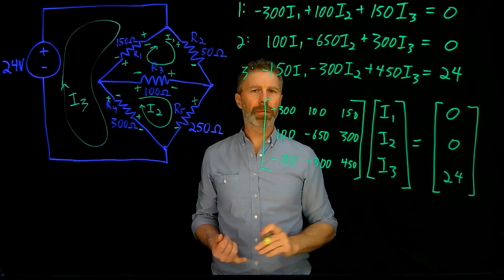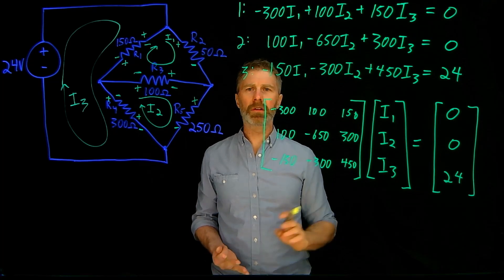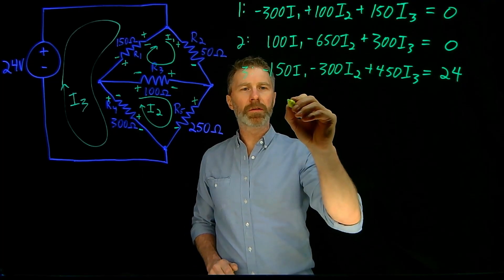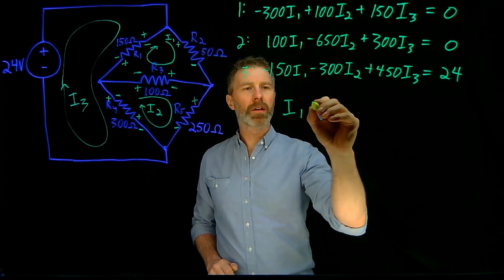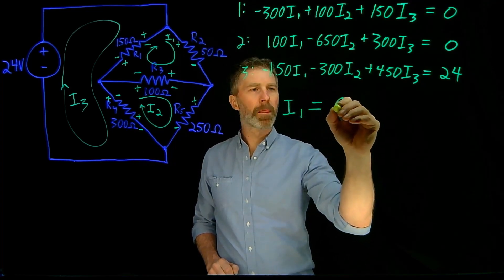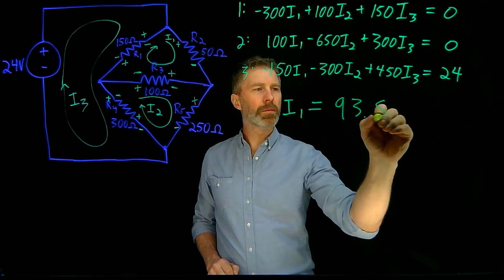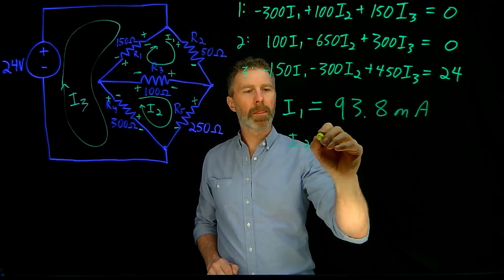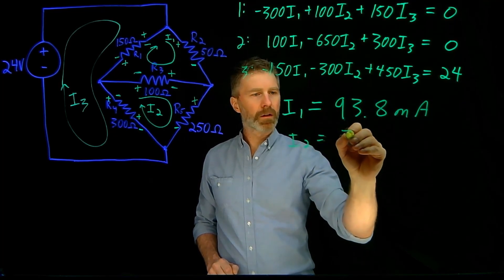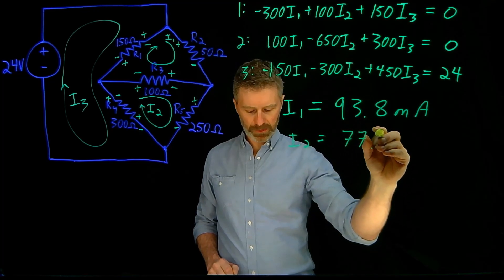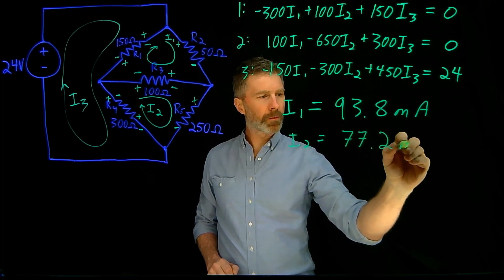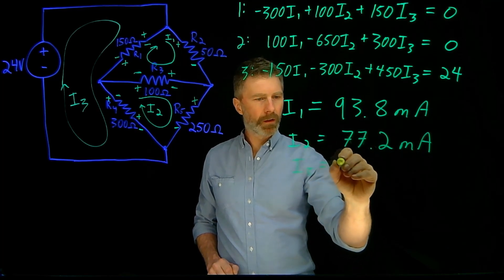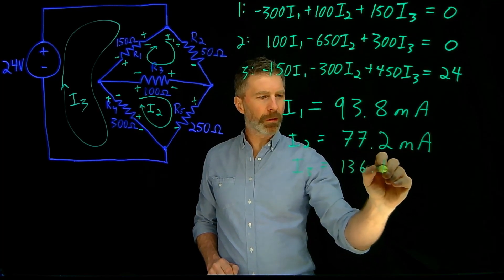You can use MATLAB, Excel, a calculator, or even solve it by hand. When you do solve the system of equations, what you end up with is I1 equals 93.8 milliamps, I2 equals 77.2 milliamps, and I3 equals 136.1 milliamps.